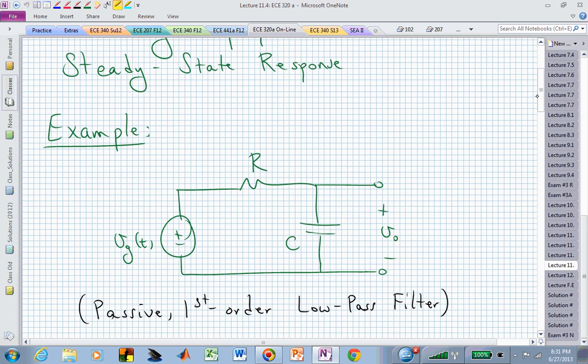Let's look at an example, and I hope that by this point that example is screaming at you in terms of what it is. That's a passive first-order low-pass filter, and you should be very comfortable with that.